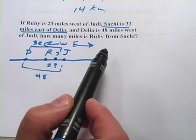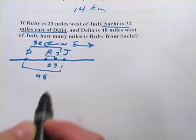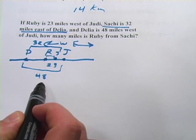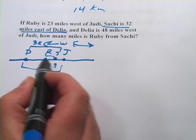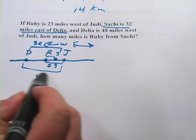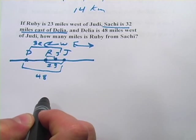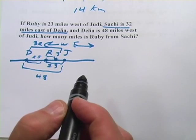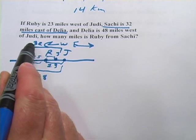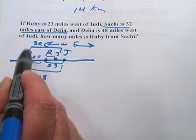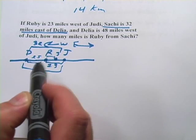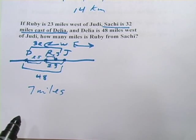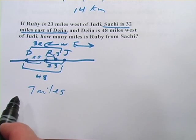Now the question is, how many miles is Ruby from Saatchi? So we want to find Ruby to Saatchi. What I want to do is figure out the distance between Delia and Ruby. I know the chunk from Ruby to Judy is 23, and the chunk from Delia to Judy is 48. So I subtract 23 from 48, which gives me 25. Then to find the distance from Ruby to Saatchi, I subtract 25 from 32 — the distance from Delia to Saatchi — and 32 minus 25 is 7 miles.